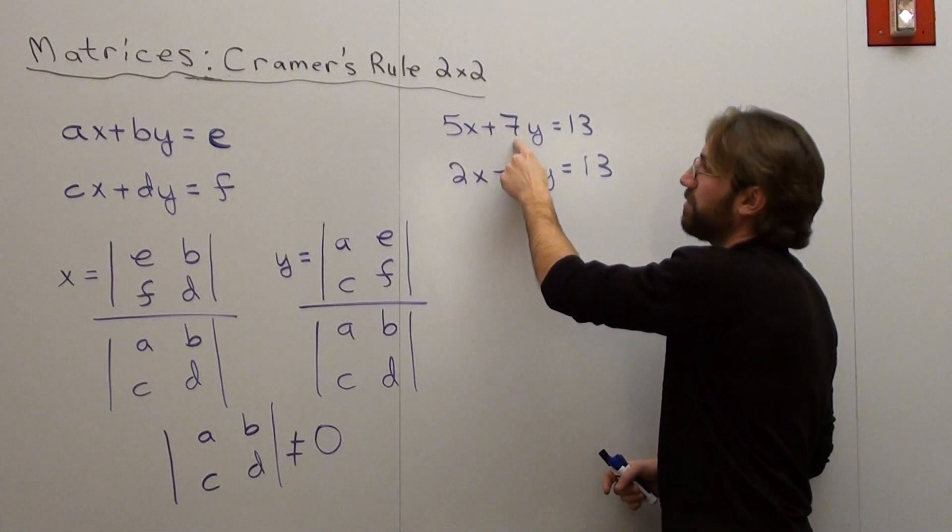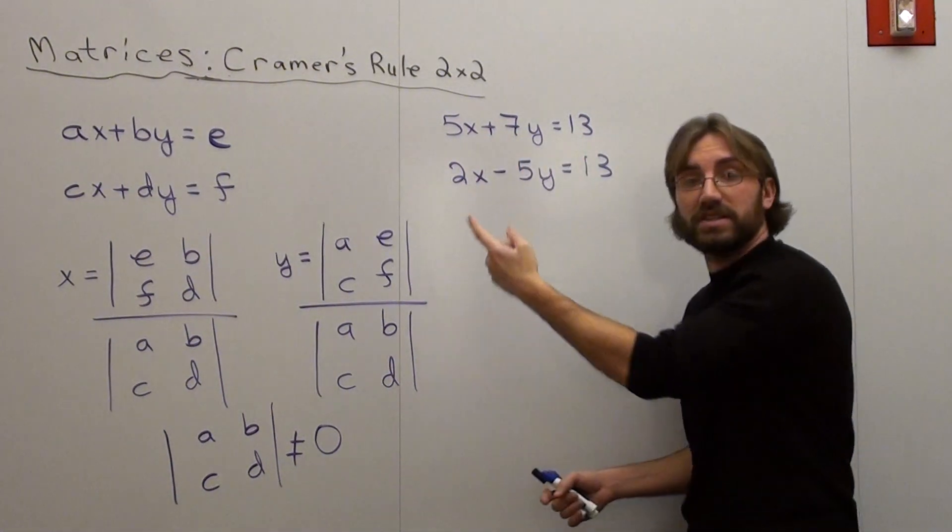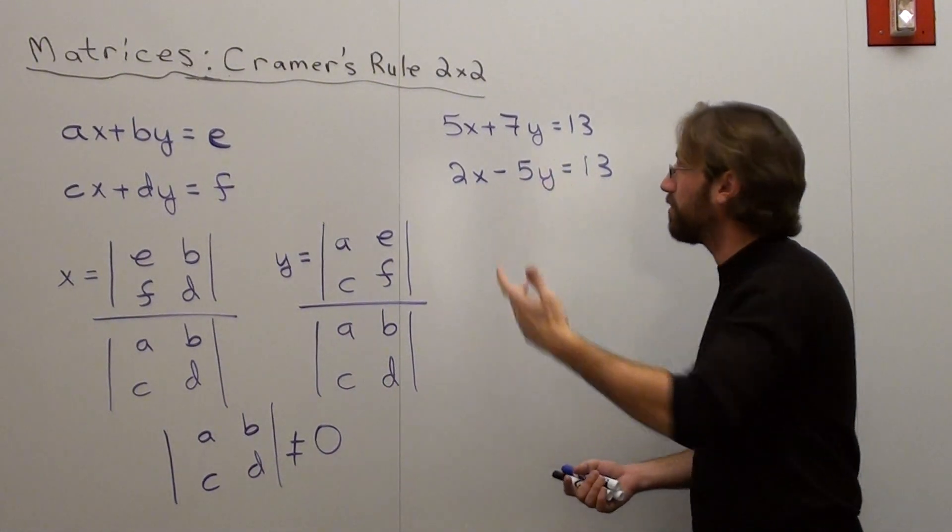So the a would be 5, the b would be 7, the e would be 13, the c would be 2, the d would be negative 5, the f would be 13.